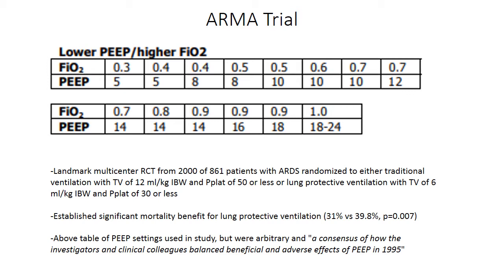The most common way to set PEEP is using the ARDS net PEEP/FiO2 tables. There are two: a lower PEEP/higher FiO2 table and a higher PEEP/lower FiO2 table. The lower PEEP table came from the ARMA trial — a landmark multicenter RCT from 2000 of 861 patients with ARDS, randomized to traditional ventilation (tidal volume 12 mL/kg IBW, plateau pressure ≤50) versus lung-protective ventilation (tidal volume 6 mL/kg IBW, plateau pressure ≤30). The ARMA trial established a significant mortality benefit for lung-protective ventilation, but the PEEP settings used were arbitrary, based on expert consensus, and despite a lack of strong evidence, have been incorporated into common practice.